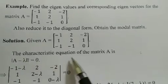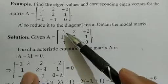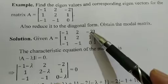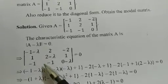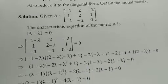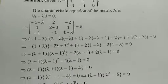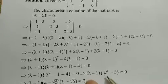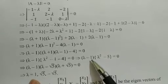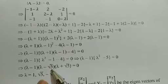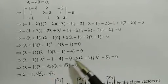Given matrix A, the characteristic equation is det(A - λI) = 0. Substituting -λ on the diagonal elements, we expand the determinant row-wise, simplify, and factor the resulting cubic polynomial. We get factors (λ - 1)(λ² - 5) = 0, which further gives (λ - 1)(λ - √5)(λ + √5) = 0. So the eigenvalues are λ = 1, λ = √5, and λ = -√5.